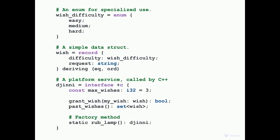Here's a more detailed Djinni IDL example: an enum with three values, a record containing that enum and a string with a deriving statement for auto-generated equality and ordering comparisons, and an interface annotated '+c' for C++ implementation, containing a constant, a couple of methods, and a static factory method. Types are placed on the right side, which we think is clearer and aligns with where C++ is heading.